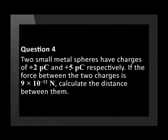Question 4. Two small metal spheres have charges of positive 2 picocoulombs and positive 5 picocoulombs respectively. If the force between the two charges is 9 times 10 to the minus 12 newtons, calculate the distance between them.